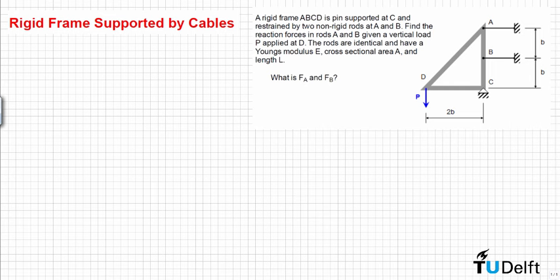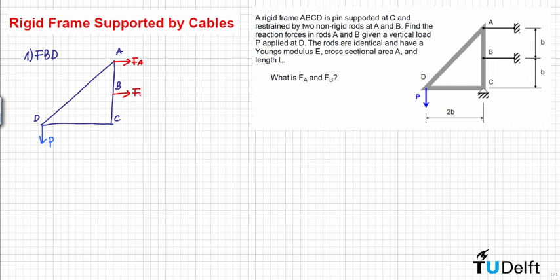In order to do this, we can start by drawing the free body diagram of the problem. We have the applied force P and the reaction forces FA, FB, Rx, and Ry. Remember this is a pin support, so the displacement in the vertical and horizontal direction is constrained. We can now apply the equilibrium equations to find the values of these reactions in terms of the force P.